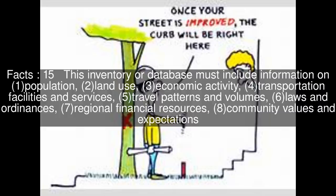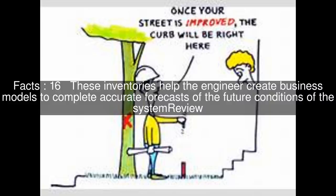This inventory or database must include information on: 1. Population, 2. Land use, 3. Economic activity, 4. Transportation facilities and services, 5. Travel patterns and volumes, 6. Laws and ordinances, 7. Regional financial resources, 8. Community values and expectations. These inventories help the engineer create business models to complete accurate forecasts of the future conditions of the system.